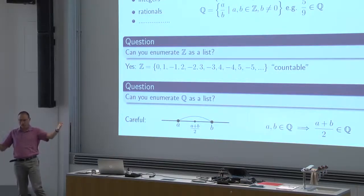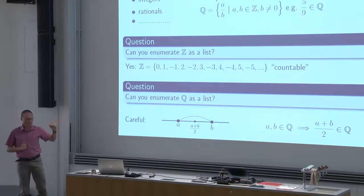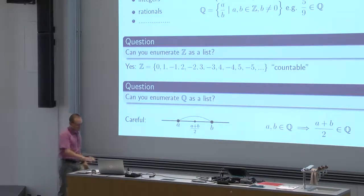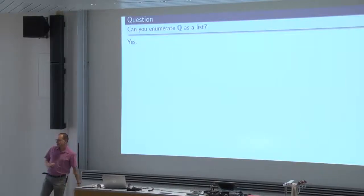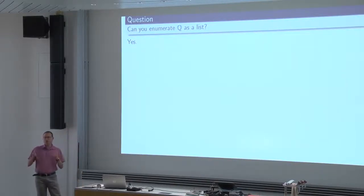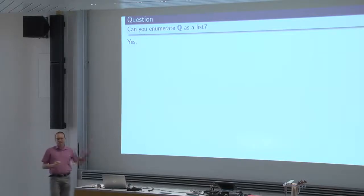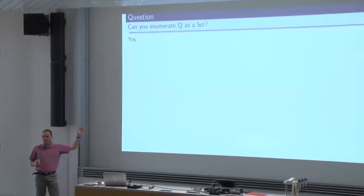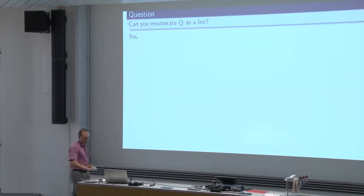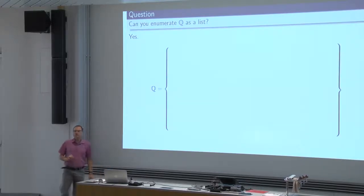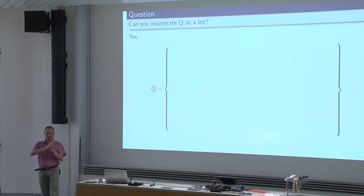Those of you who said no — that was your intuition probably. Well, can you enumerate the rationals as a list? It turns out the answer is yes. The talk today will have two takeaway messages, and this will be the first: it is possible to enumerate the rational numbers as an infinite list. Here is how we are going to do it. I will now convince you that it is possible by writing this list.